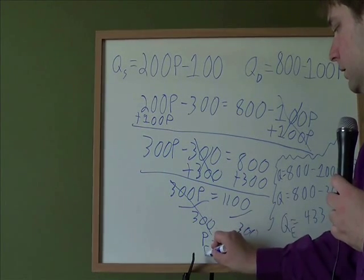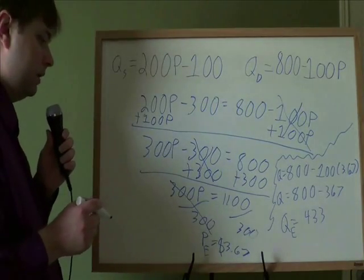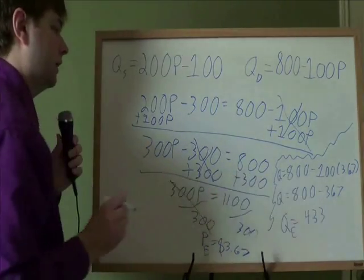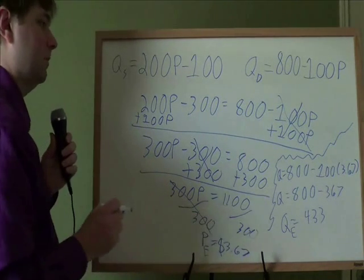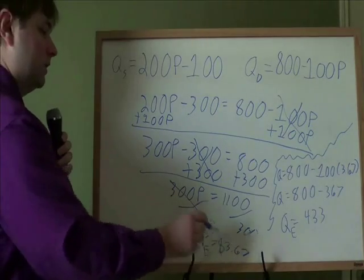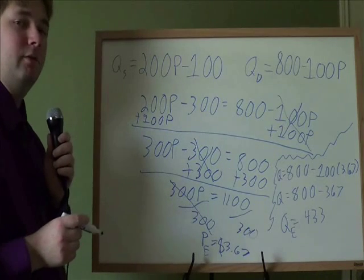And that's our equilibrium price and our equilibrium quantity. Almost done. We've got our equilibrium price and equilibrium quantity. Next thing is we've got to make sure we remember what exactly this equilibrium price means. Remember, the price is $3.67. That's how much the demanders are going to pay. When you go and buy an apple, it's now going to cost $3.67.